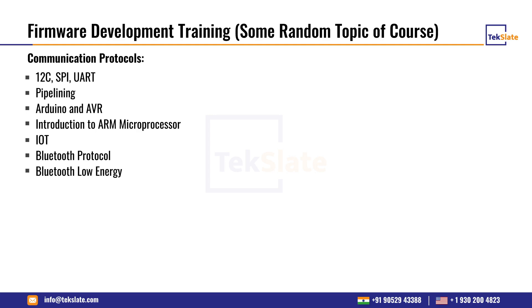I have already talked about the communication protocols and the need to communicate each module with one another. For communication, we have wired and wireless communication. With wired communication, there are many protocols like I2C, SPI, and UART. For wireless communication, there is Wi-Fi and Bluetooth. These are all covered under this course.